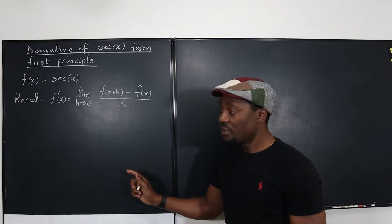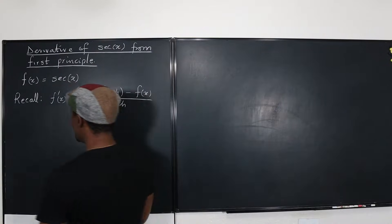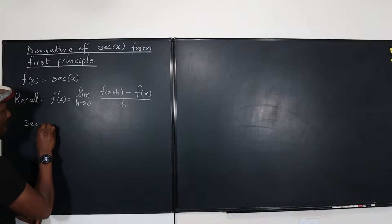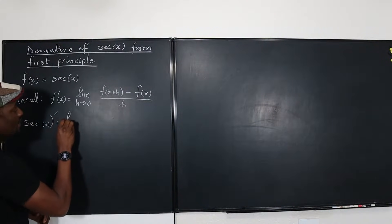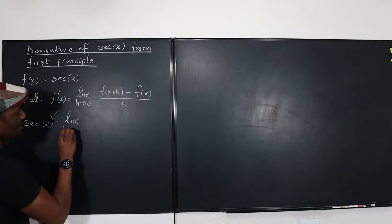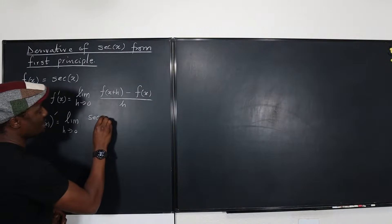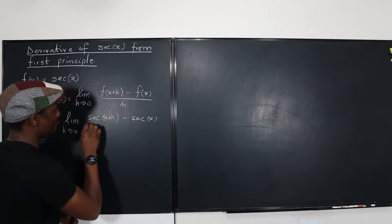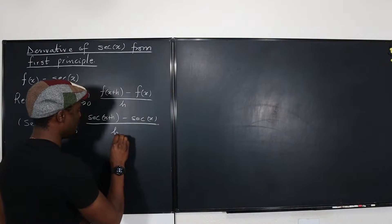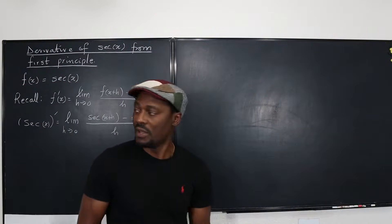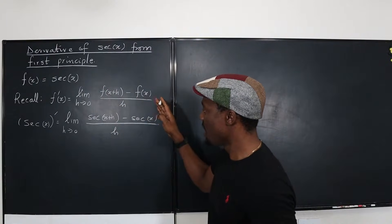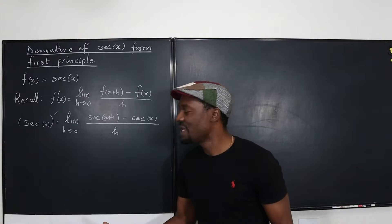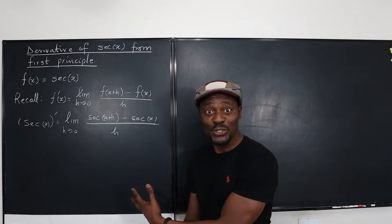For the definition, the derivative of secant x is the limit as h approaches zero of secant(x+h) minus secant(x), divided by h. That's how we define the derivative from first principles. All we have to do is work through the algebra, the trig combinations, and take limits.